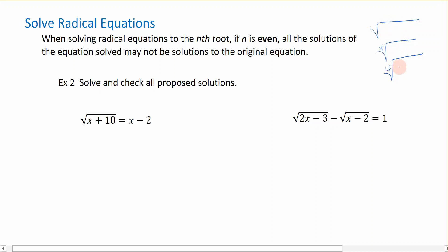Something to note: when you're solving radical equations to the nth root, if that index is an even number, then all of the solutions you solved may not be solutions to the original equation. This is an indication that you're going to need to check your solutions.